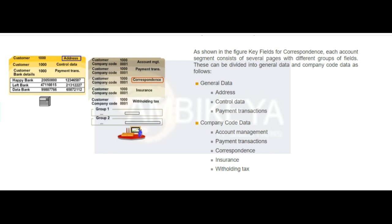Address Details: The Address Details field is used to specify the street and house number, postal code and city, and country fields. The country key contains the information which the system uses to check entries such as the length of the postal code and the bank account number.